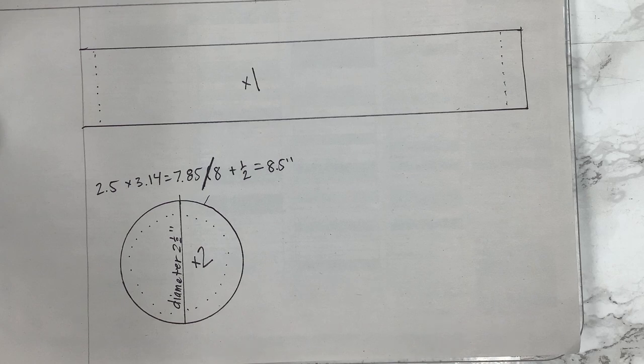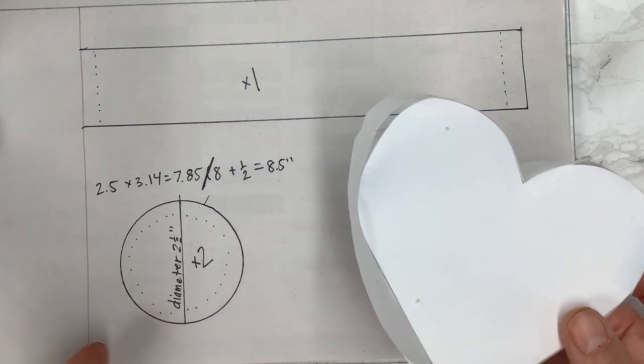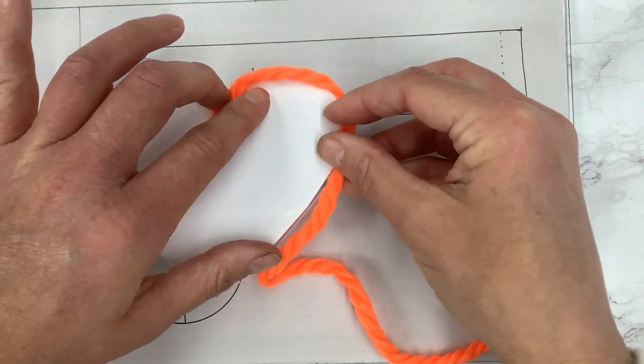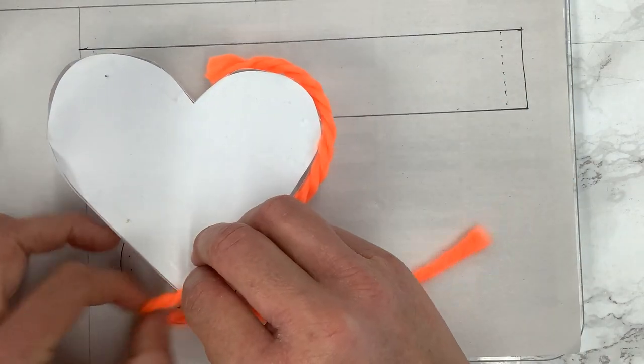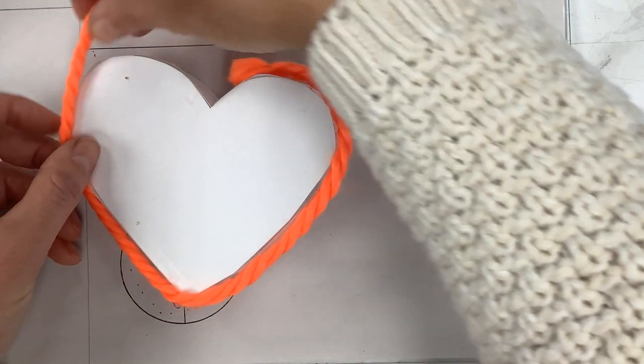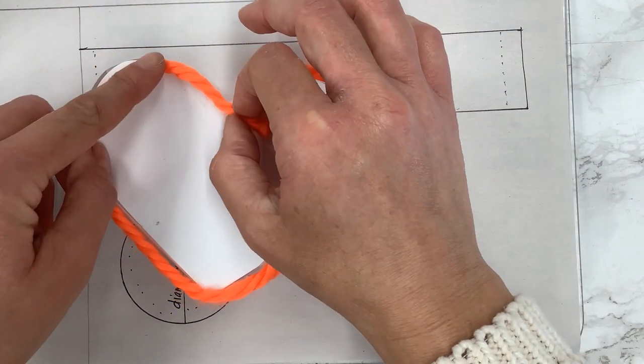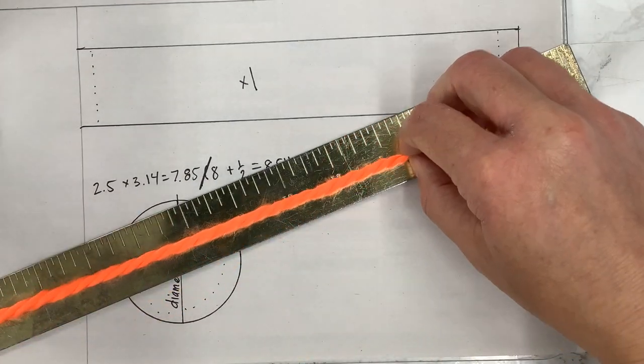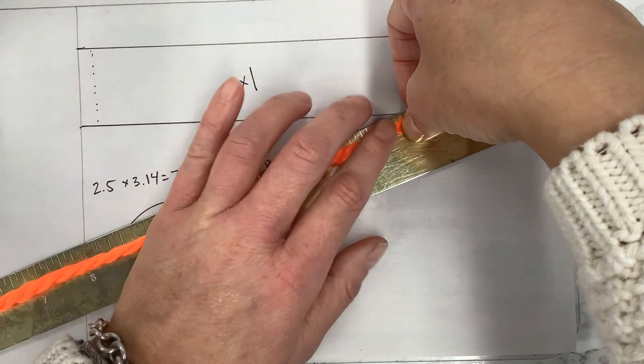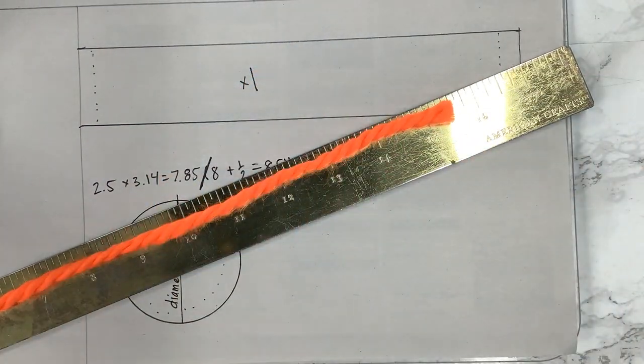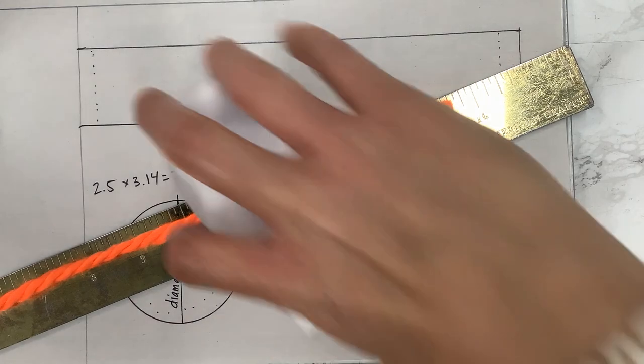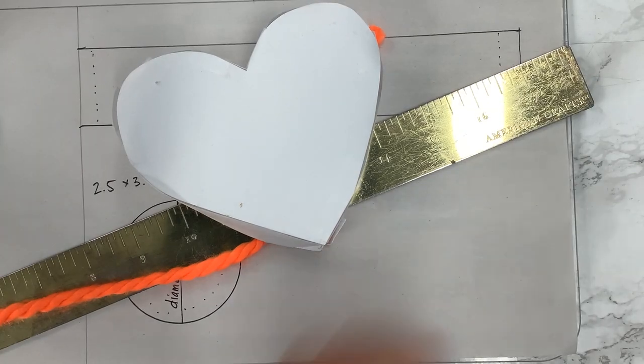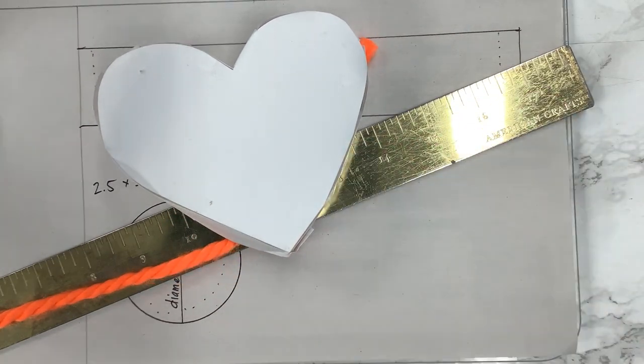If you wanted to do any other shape besides a circle the math isn't gonna work but just use the string. So again I would just figure out my starting point, I would wrap my string all the way around. So this string when I stick it on the ruler it's much longer. Let's see that one's fourteen and a half and then again I'd add about half an inch. So for if I was doing this particular size heart I would make sure that my entire rectangle is fourteen and a half, I'm sorry fifteen and a half inches long since I had to add that extra inch.